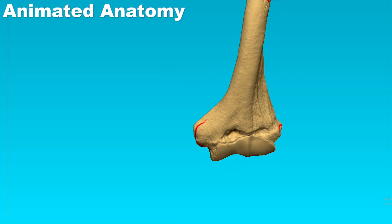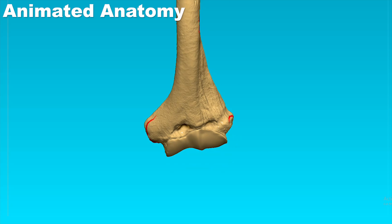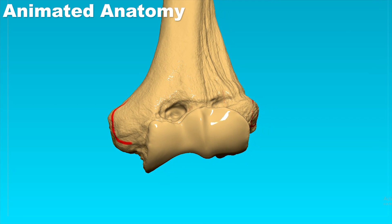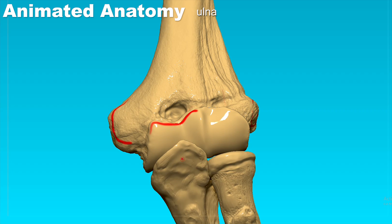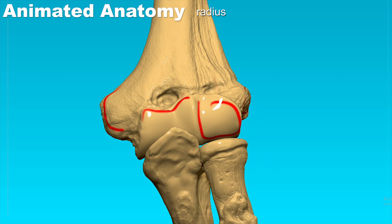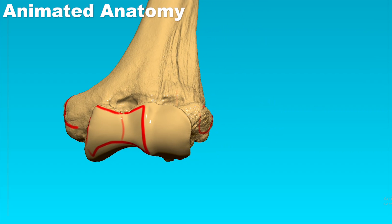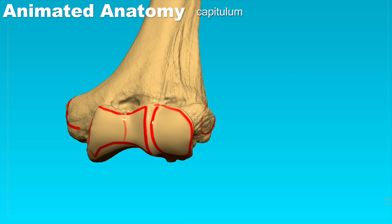Another thing we can see here is this articular surface. This articular surface is for the ulna, and this one here is the articular surface for the radius. The articular surface for the ulna is called the trochlea — it has this median groove here — while the articular surface for the radius is called the capitulum.